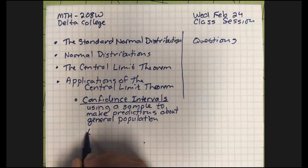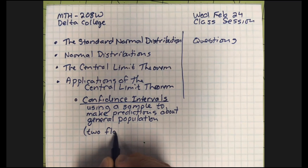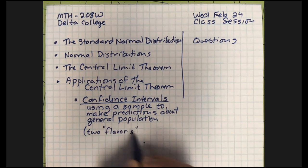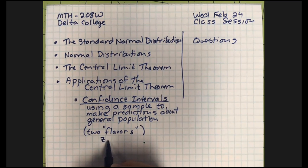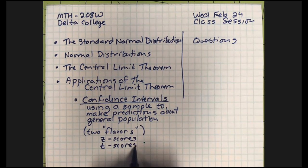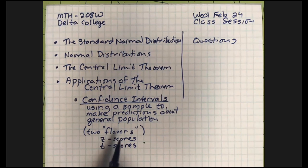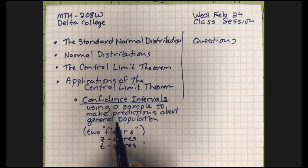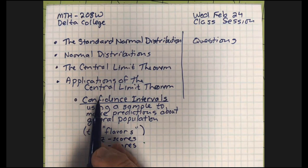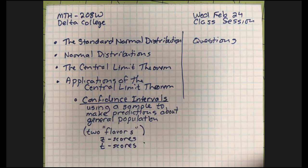We'll give you two ways to do confidence intervals depending on what kind of information you have — with Z-scores or with another distribution called T-scores. Because we have a very full plate this week, if I don't check off all of these things today, I'll bring them into next week. We have a little bit of freedom to manipulate our schedule.